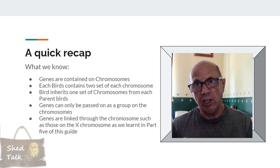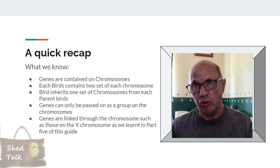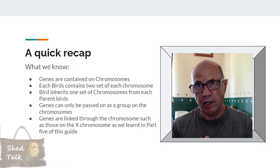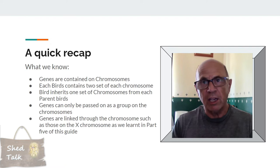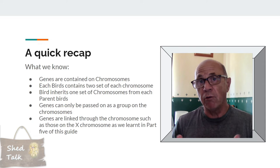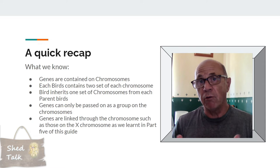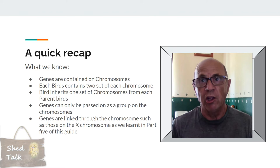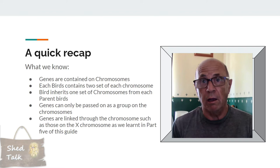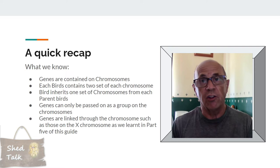The important thing to remember is that genes on a chromosome can only be passed on as a complete set. If you imagine a string with a whole load of beads running down it, and you've got 25 of those strings, you can't take a bead off and just pass that on — it has to go as a complete set. This means all of the other genes on that chromosome are referred to as being linked via the chromosome. We saw this with the X chromosome, which contains varieties such as opaline and cinnamon, all of which must be passed on as a complete set.